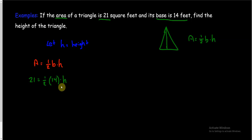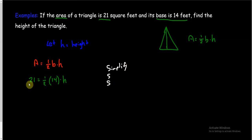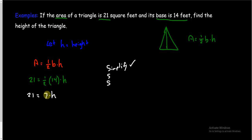Now we have this equation to solve. We've read and understood it, defined a variable, and written an equation — now we just need to solve it. Remember the three S's to solving: the first thing we need to do is simplify. We'll look to see if we can simplify this. I can multiply one half times 14 — a half times 14 is just half of 14, which is 7.